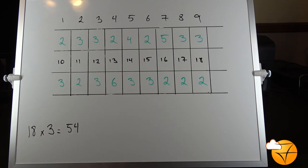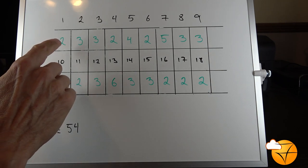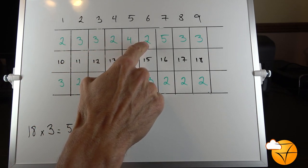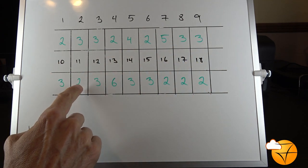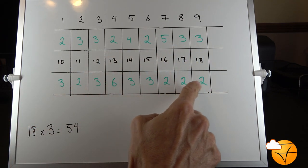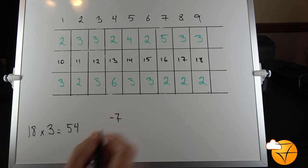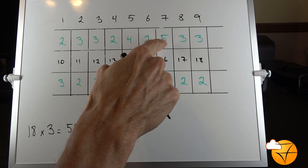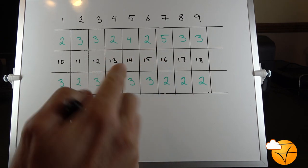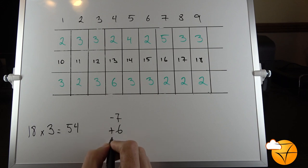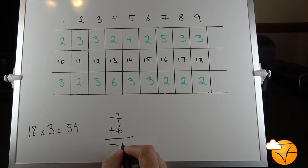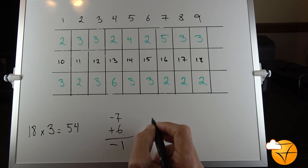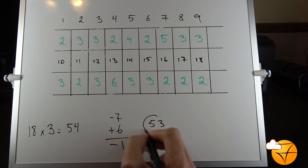99% of the time I'm basing it off 54. Here we go: one down, two down, three down, four down, five down, six down, seven down. One, two, three, four, five, six over.